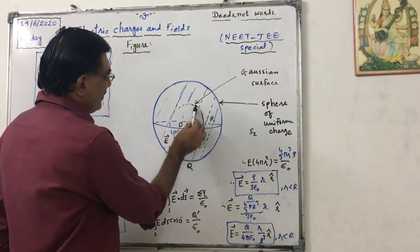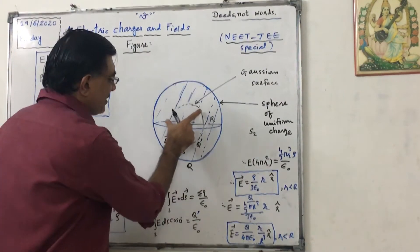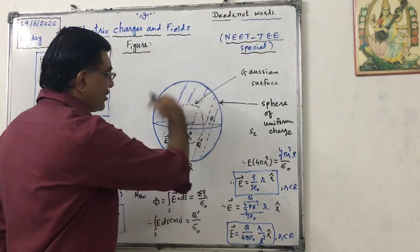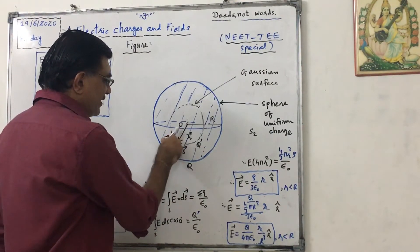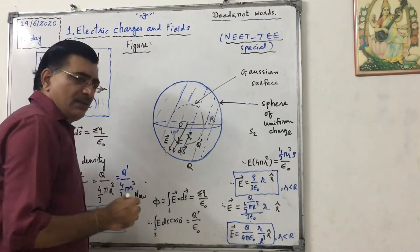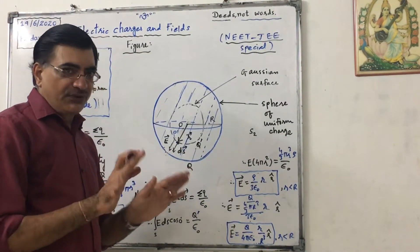So I have considered this as Gaussian surface. It is enclosing this much charge, that is Q', and total charge is capital Q. We know that electric field will be in this direction because we have considered positive charge distribution, normally we consider positive charge distribution.